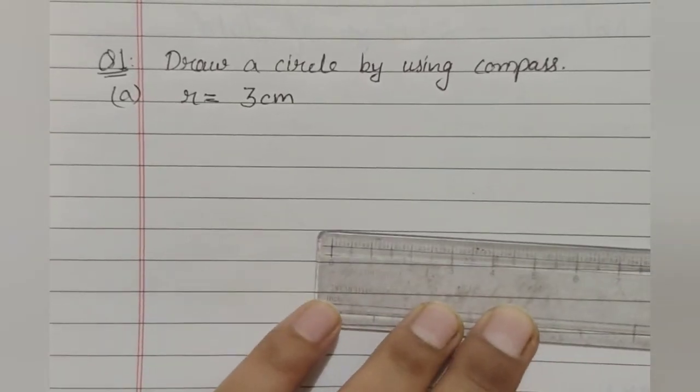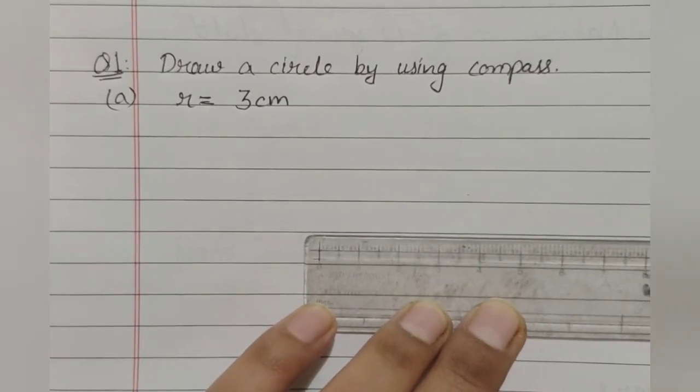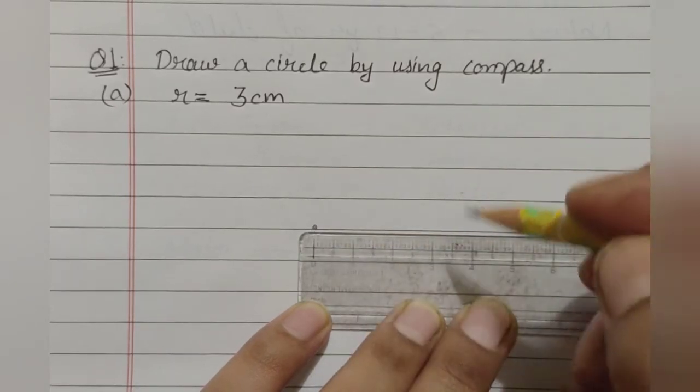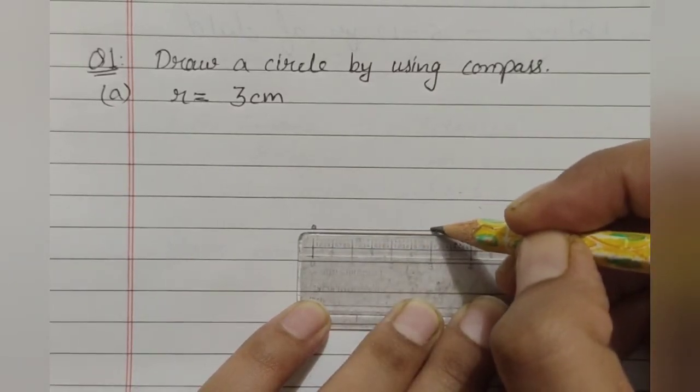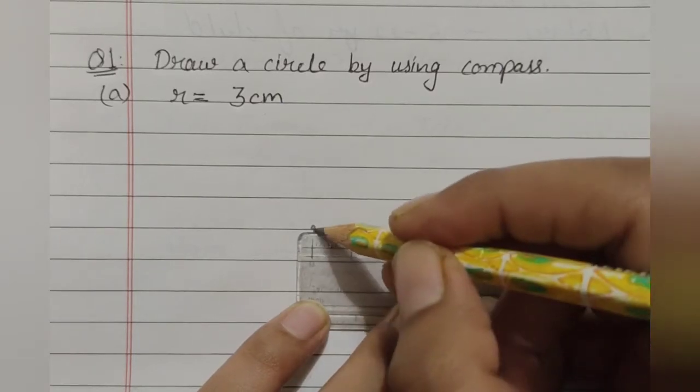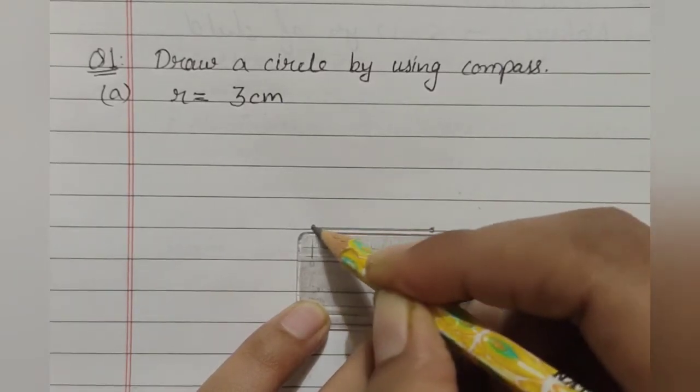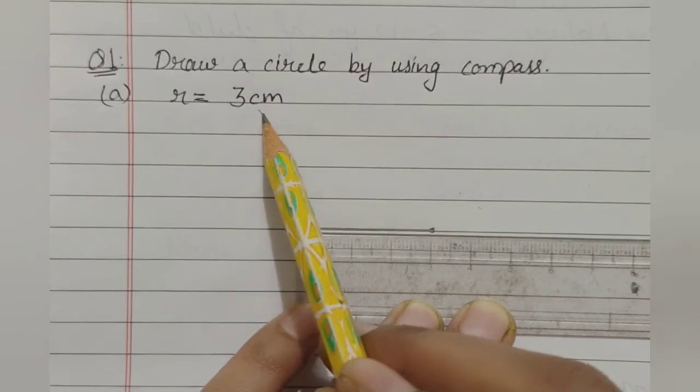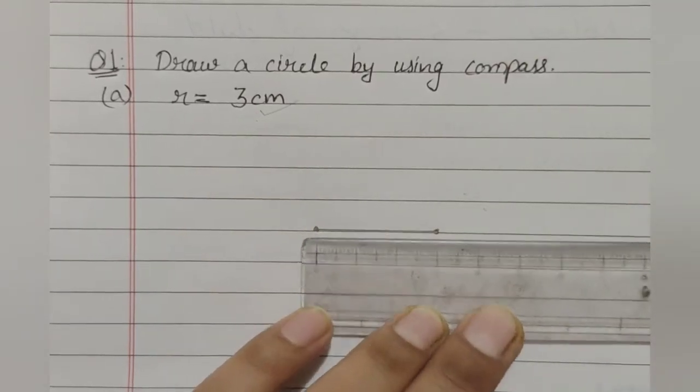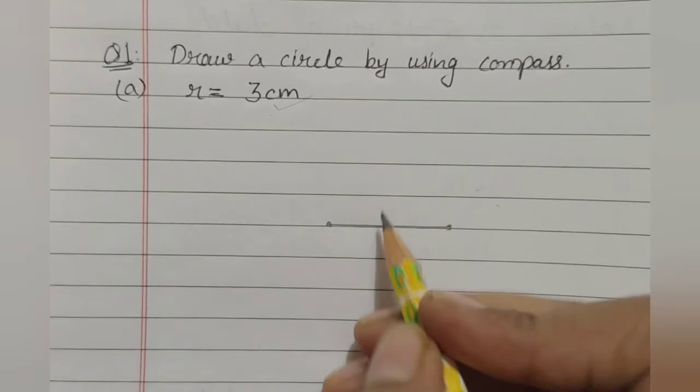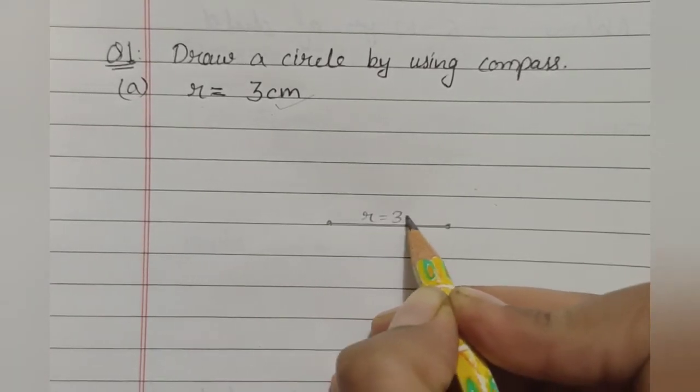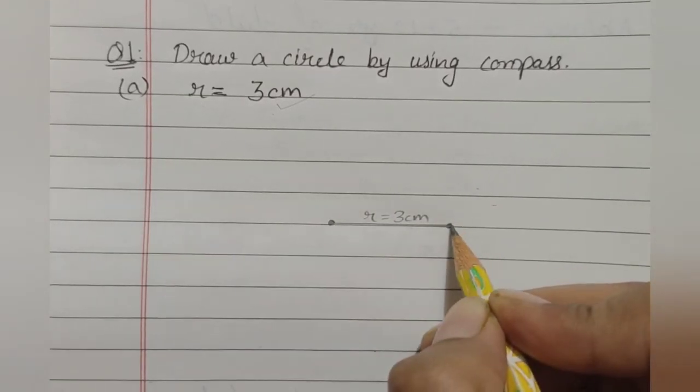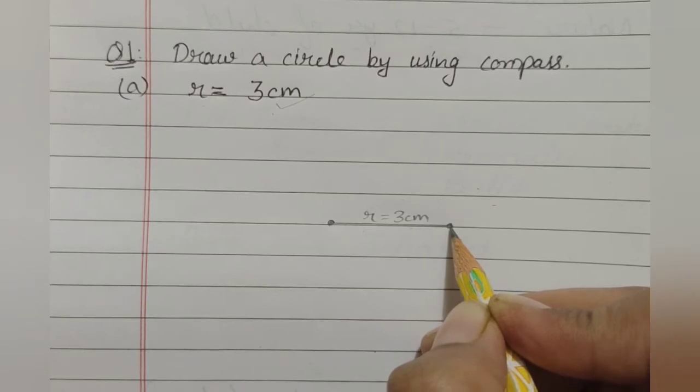So, with the help of your scale and pencil, first of all, make a point at 0 cm like this and then another point at 3 cm. You have to join these two points by drawing a single line and this must be of the same distance as given to you. Radius. Remember, this must be the radius of a circle. R is equal to 3 cm. This point would be the center of the circle and this point must lie on the circumference of a circle.